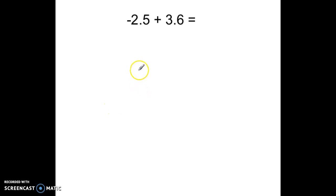Now here we have our first problem, negative 2.5 plus 3.6. When I look at these two numbers, 3.6 has the greater absolute value. And in this case, because the signs are different, we're going to subtract.